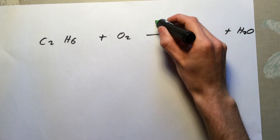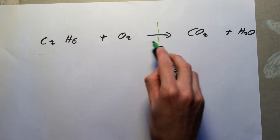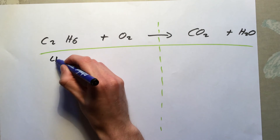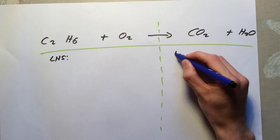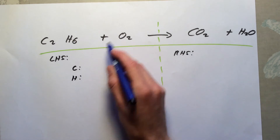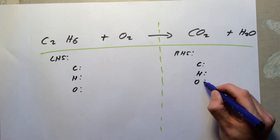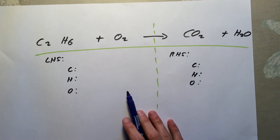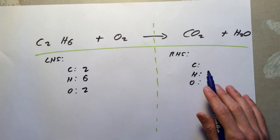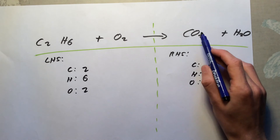Once again, I'm going to draw my table out. Make sure you have a line down the middle for left-hand side and right-hand side. I'm going to list the atoms I've got: left-hand side - carbons, hydrogens, oxygens; right-hand side - carbons, hydrogens, oxygens. Counting up my atoms now: I've got two carbons, six hydrogens, two oxygens on the left. On the right-hand side at the moment, I've got one carbon, two hydrogens, and three oxygens.